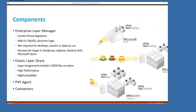Moving to the architecture: when you download this technology, you download something called an Enterprise Layer Manager, which is a virtual appliance based on CentOS. There's no SQL Server database to set up — everything runs from the appliance. The appliance includes a MySQL database. We don't need a huge database, and if you back up the appliance, you back up not only the database and all the business logic, but also all the layers, since they're all stored within the appliance.